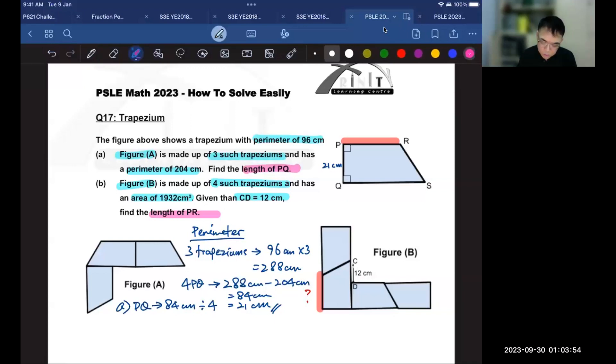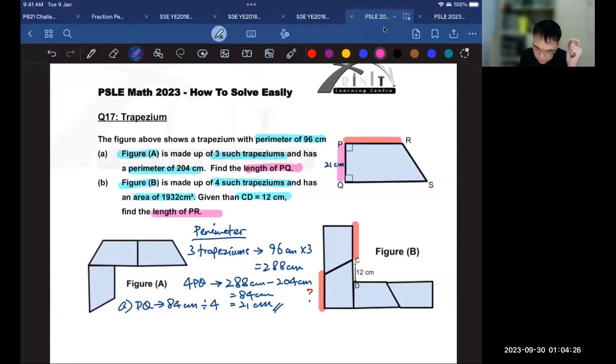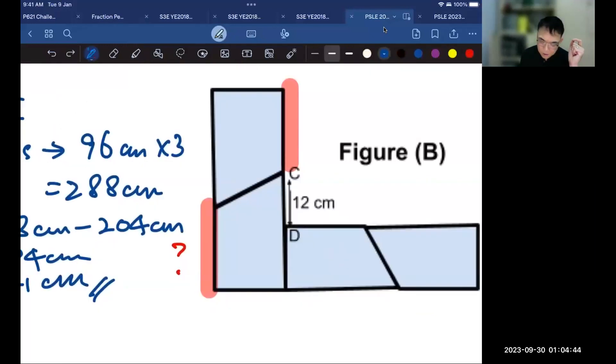Bear in mind that this red line is the same as the line over here. Remember that we already found that PQ is 21 cm. PQ is the equivalent of this line for this trapezium. That means that I know that this portion here is 21 centimeters.